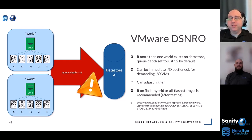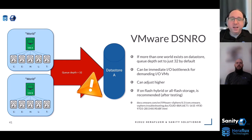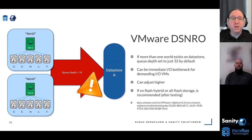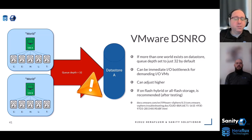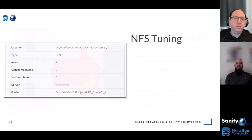The setting is called Disk.SchedNumReqOutstanding, or DSNRO for short. This is why people were seeing performance gains with RDMs or vVols — you're working around this setting that nobody knows about. You can go adjust this per host per LUN, and you don't have to do it to all of them. On most all-flash storage arrays, we're comfortable bumping this up to 128. This is arguably one of the silent performance killers: the SAN LUN telemetry looks great, but Windows shows everything as bad. This is probably why — fix it.